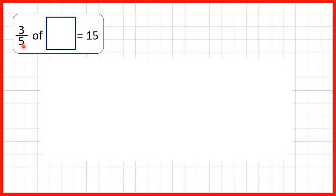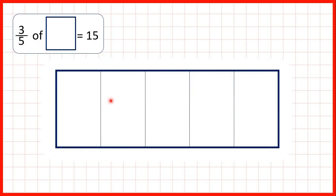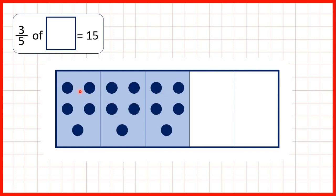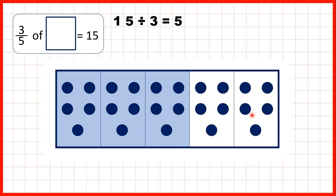Finally, we knew that three-fifths of something was 15. We can show a fraction bar with 3 fifths highlighted, and we know 15 counters need to be shared across those 3 fifths. So we divided 15 by 3 to find that there are 5 counters in each fifth. If there are 5 counters in each fifth, there must be 5 in the remaining fifths too, so we multiplied by 5 to get 25 as our total quantity.